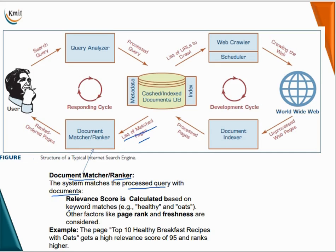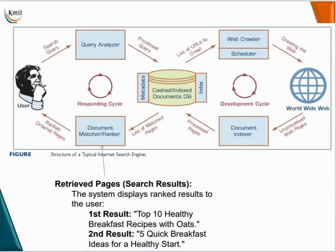The document matcher and ranker matches the processed query with the documents. A relevance score is calculated based on keywords matched, for example 'healthy' and 'oats', and other factors like page rank and freshness are considered. The page with 'top 10 healthy breakfast recipes with oats' gets the highest relevance score of 95, ranks higher, and the system displays ranked results to the user — for example, first result is 'Top 10 Healthy Breakfast Recipes with Oats', second is 'Five Quick Breakfast Ideas for a Healthy Start'.